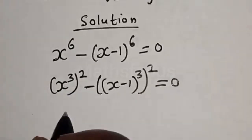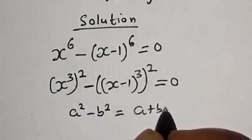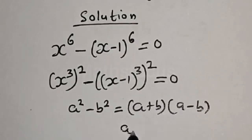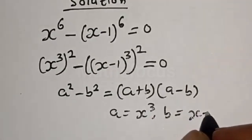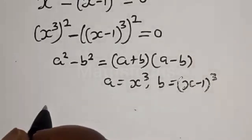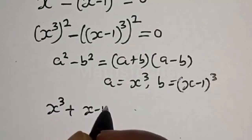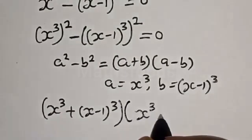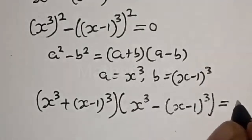This is a difference of two squares. If you have a squared minus b squared, this equals a plus b multiplied by a minus b, where a is equal to x raised to power 3, and b is equal to x minus 1 raised to power 3. Substituting, we have x raised to power 3 plus x minus 1 raised to power 3, multiplied by x raised to power 3 minus x minus 1 raised to power 3, equal to 0.